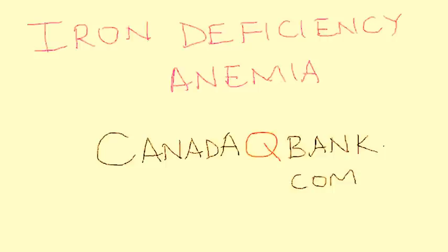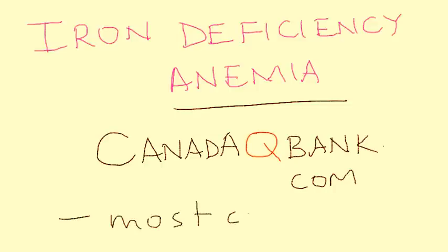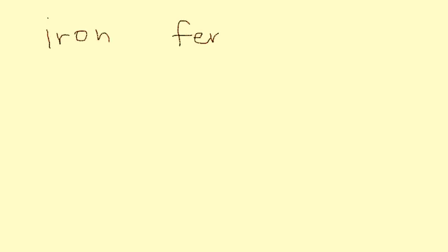Iron deficiency anemia is the topic for this video, and iron deficiency anemia is the most common cause of anemia. Before getting into everything, let's first talk about some of the key elements associated: iron, ferritin, and TIBC.